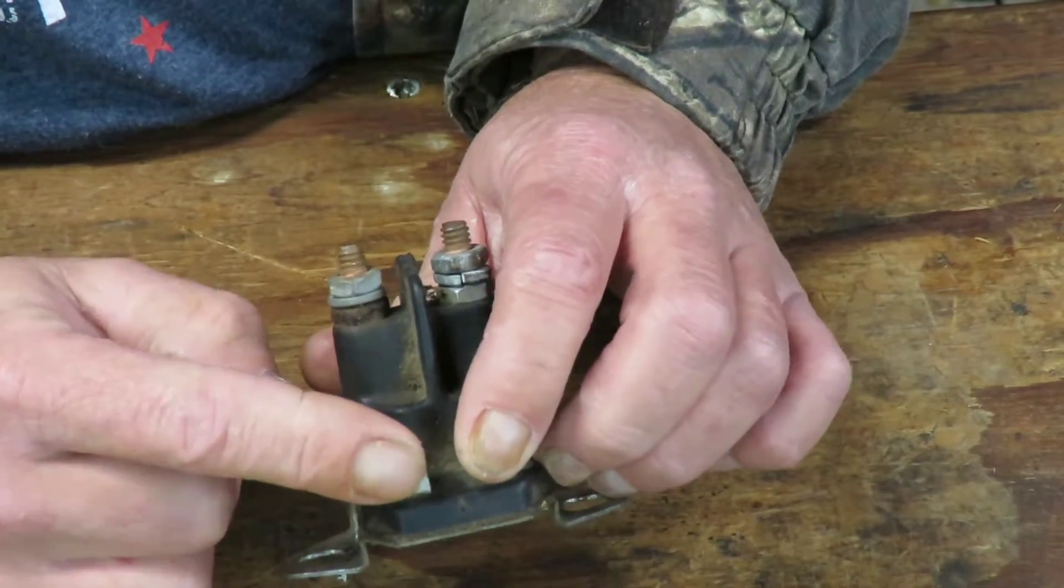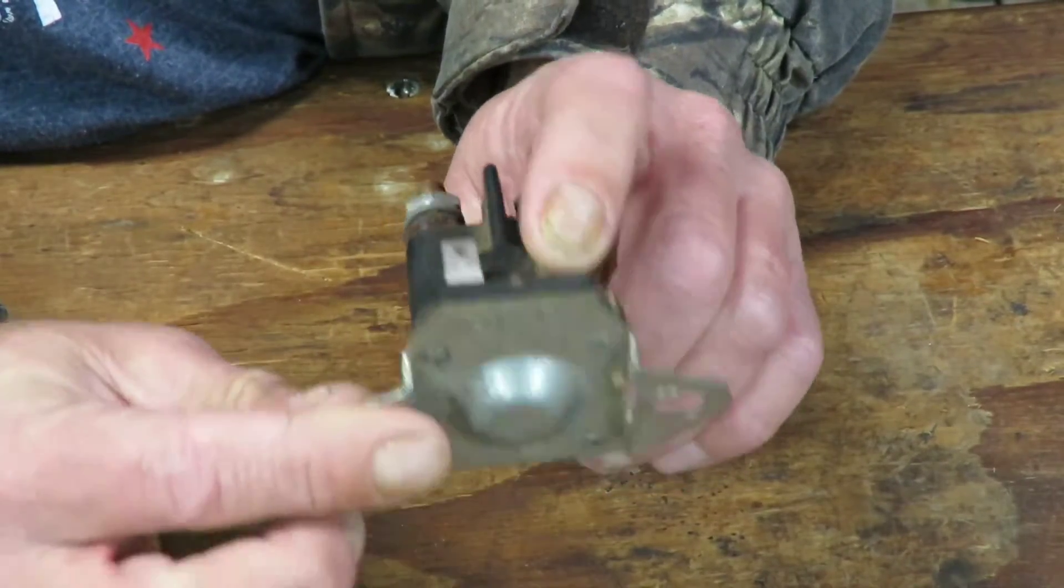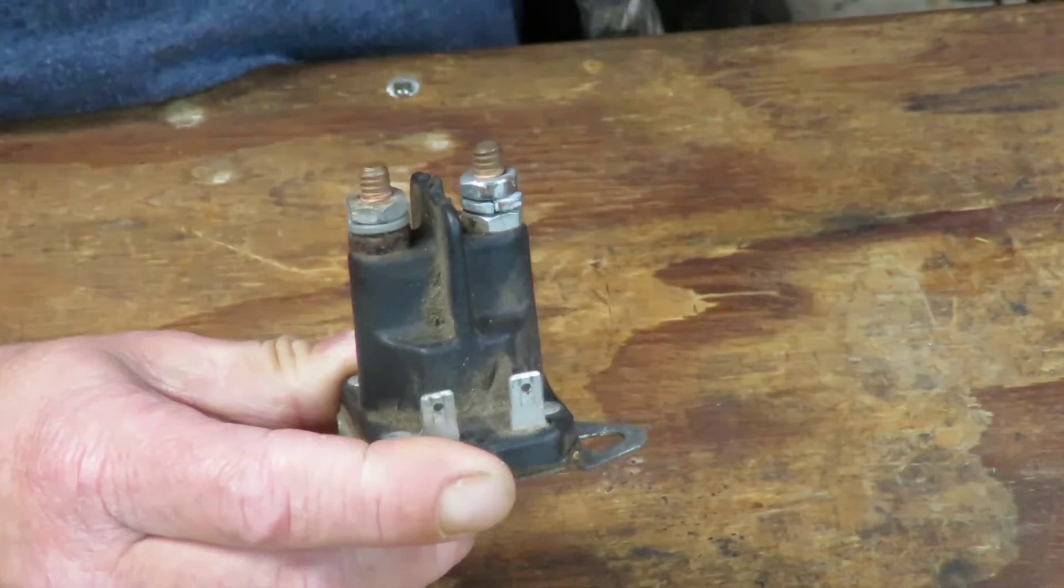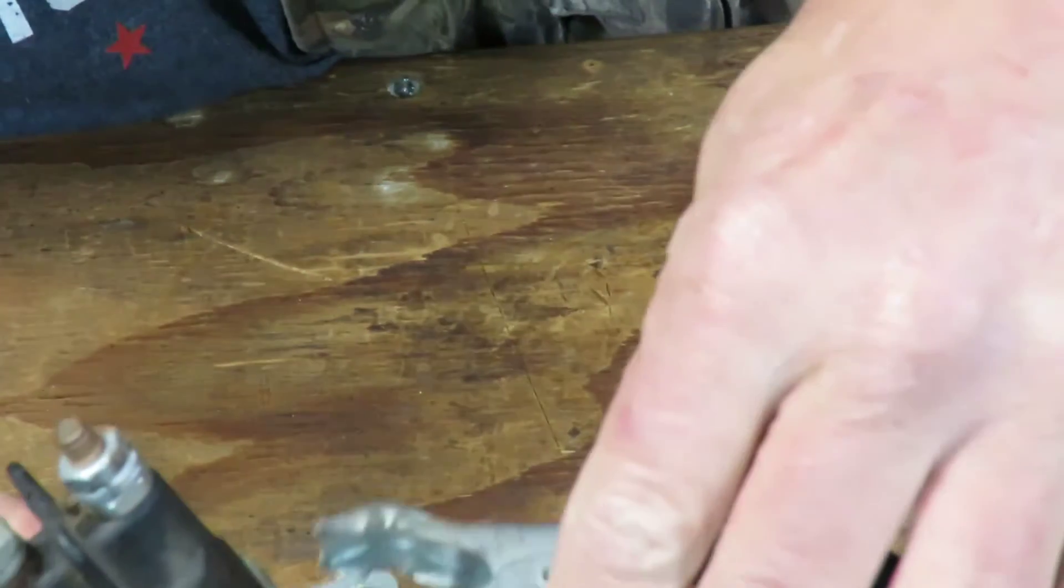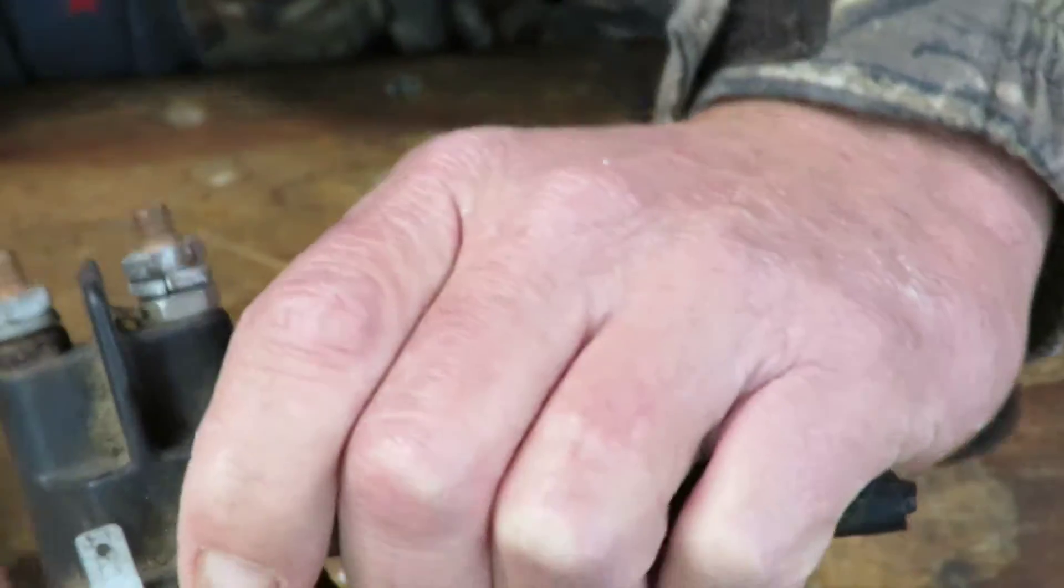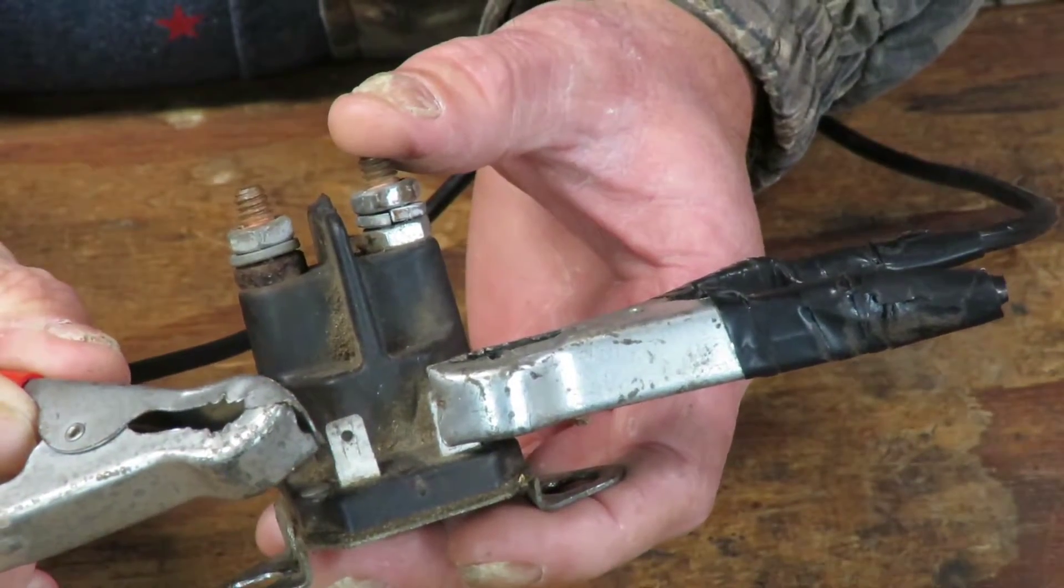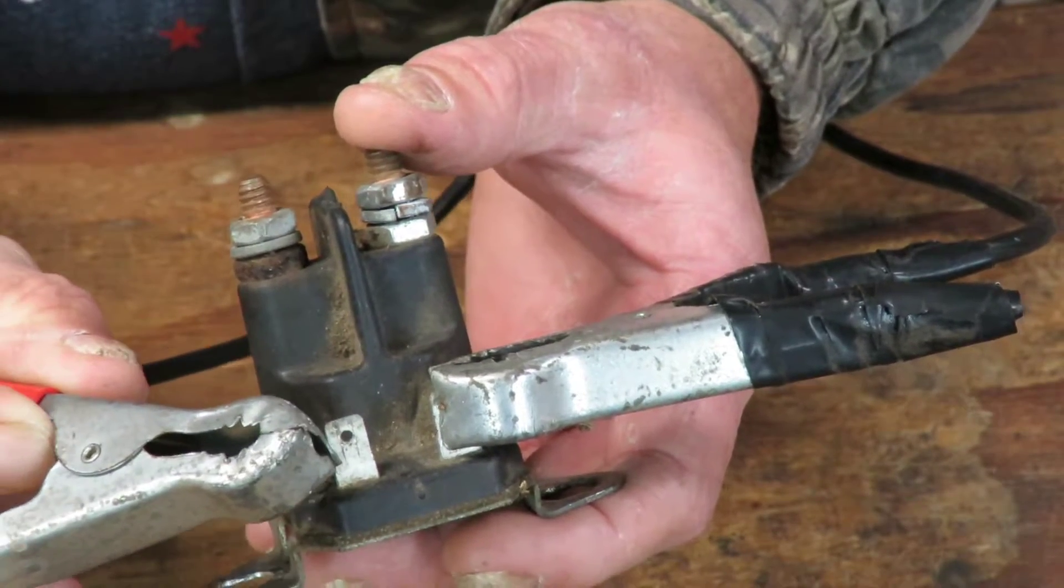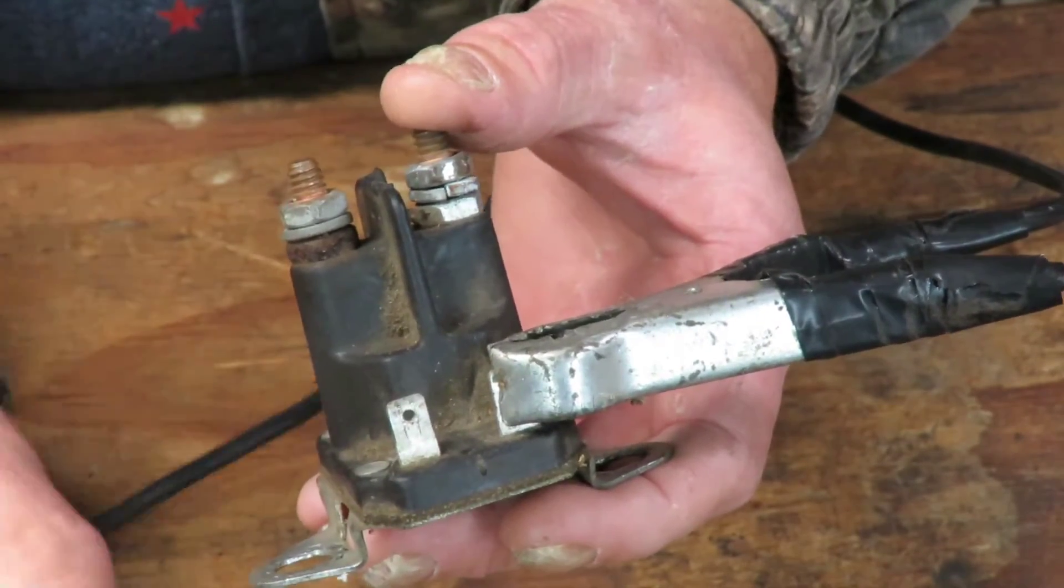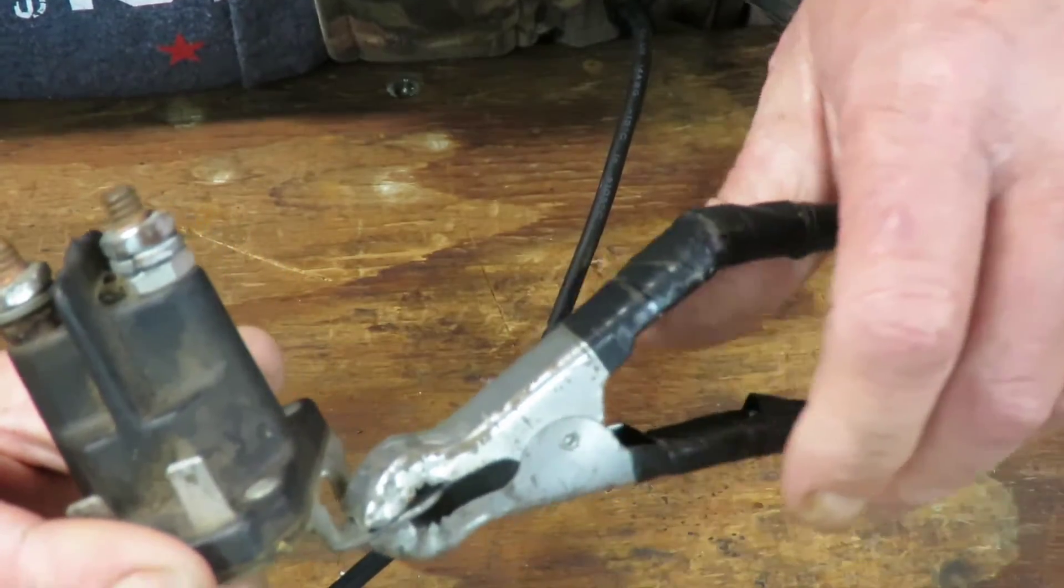This terminal inside here is grounded to this base inside here. So rather than hooking, this is a battery charger I'm using, you hook one to one to there, one on one side, and then just take your other one and touch it to this side. You hear that click. On the other one that only has one post here, you'll ground it here on the mount bracket.